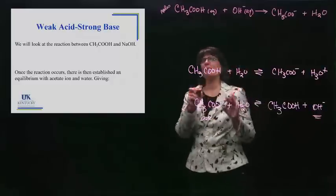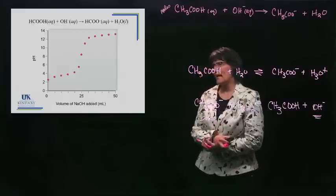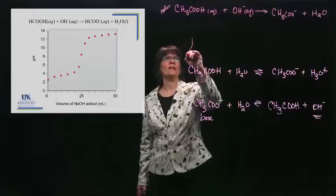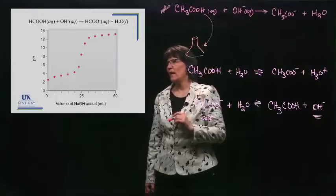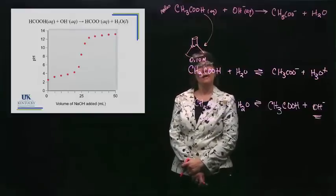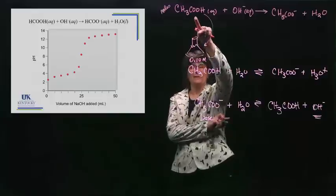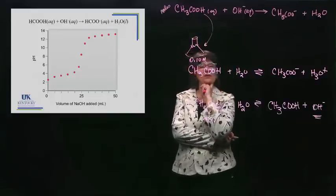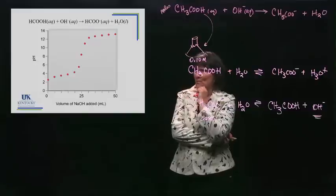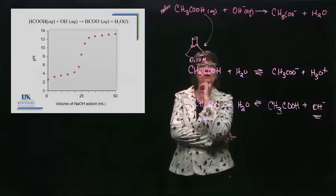Those are the things happening in the solution reaction-wise. Let's examine what is going to happen with the pH as the reaction takes place. Let's imagine that I'm starting with a flask containing 0.1 molar acetic acid. The pH would be less than 7, and it would not be as low as 1.0 because when it's a weak acid, you don't have the same concentration of H₃O⁺ as you have of the weak acid.